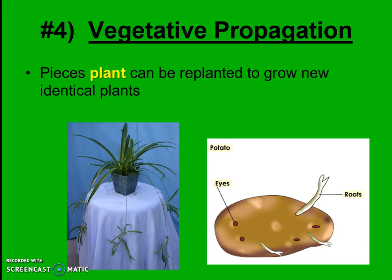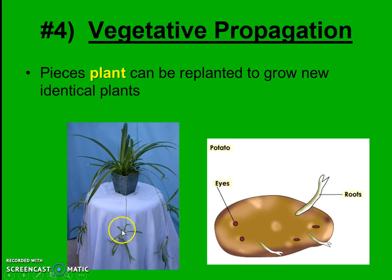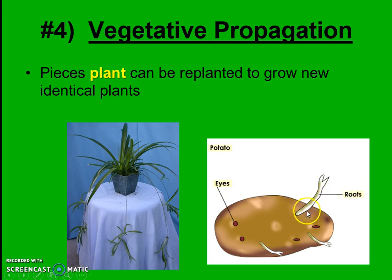A really cool one we sometimes see with plants is vegetative propagation, which means the plant will make an identical clone of itself. Here we have the spider plant, which actually makes baby spider plants at the very ends — if you just pluck off that end piece, it'll actually grow to be genetically identical to the mother plant. Same thing with a potato: when we think about its roots coming off, it can make genetically identical clones that way. Remember, all of these are asexual and are making genetically identical clones.